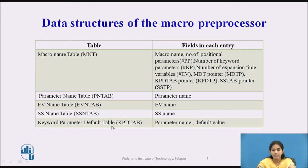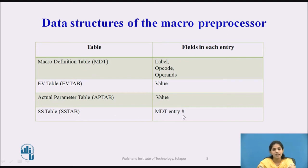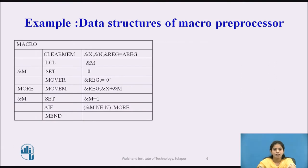The Keyword Parameter Default Table, represented as KPDT tab, has two fields: parameter name and default value. The Macro Definition Table (MDT) has three fields: label, opcode, and operands. The EV Table (expansion time variable table) stores the value of the expansion time variable with a single field: value. The Actual Parameter Table (AP tab) specifies the actual values of the parameters. The SS Table (sequencing symbol table) has a single entry: MDT entry number.